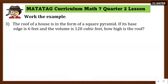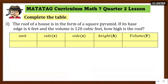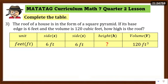Example 3: The roof of a house is in the form of a square pyramid. Its base edge is 6 feet and the volume is 120 cubic feet — how high is the roof? Complete the table: unit is feet, side is 6 feet (square base, so both sides are equal), height is unknown (question mark), and volume is 120 cubic feet. The formula to find the volume of a square pyramid is one-third times side squared times height, or side squared times height divided by 3. Substitute: 120 = (6² × h) / 3.